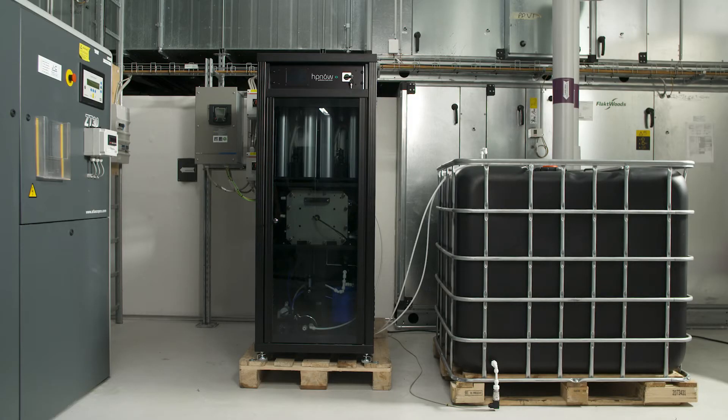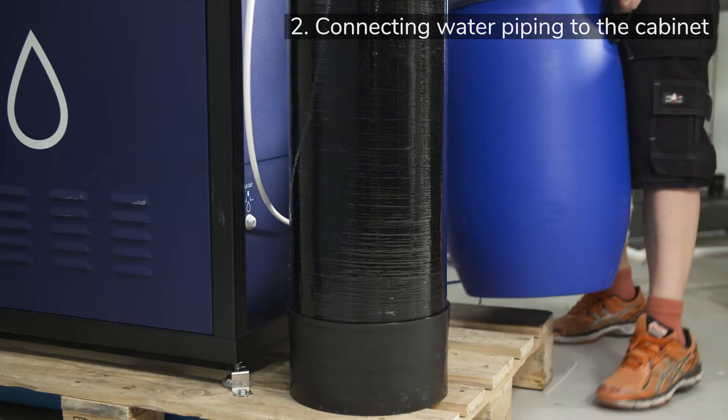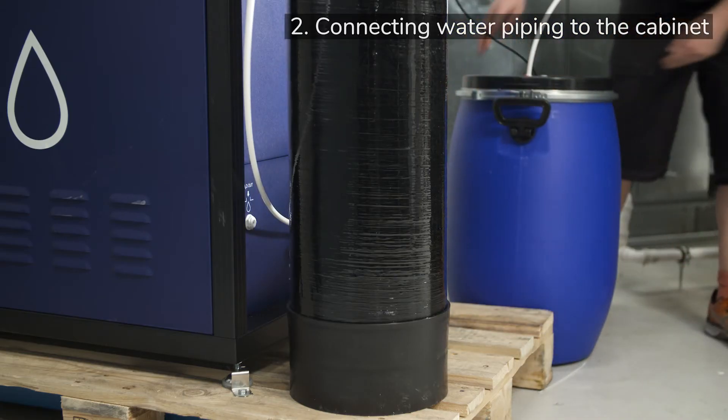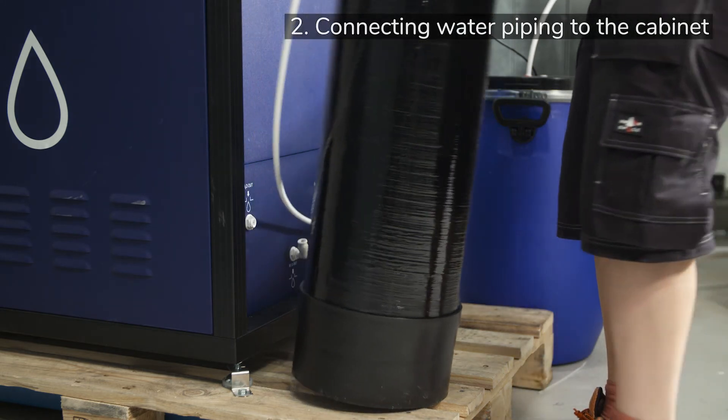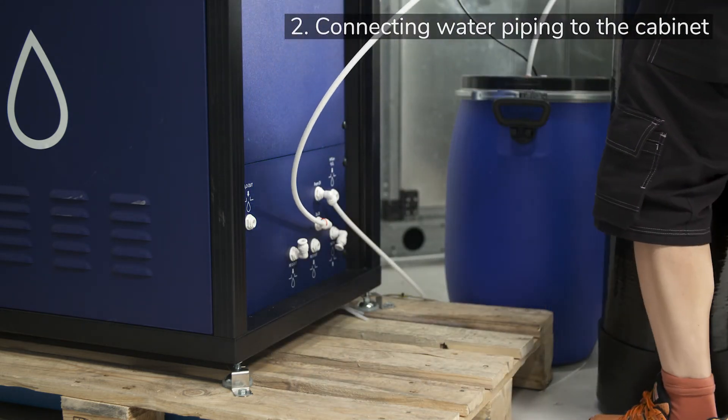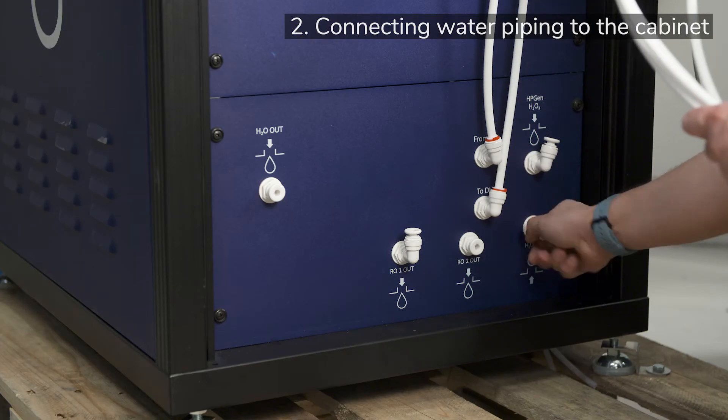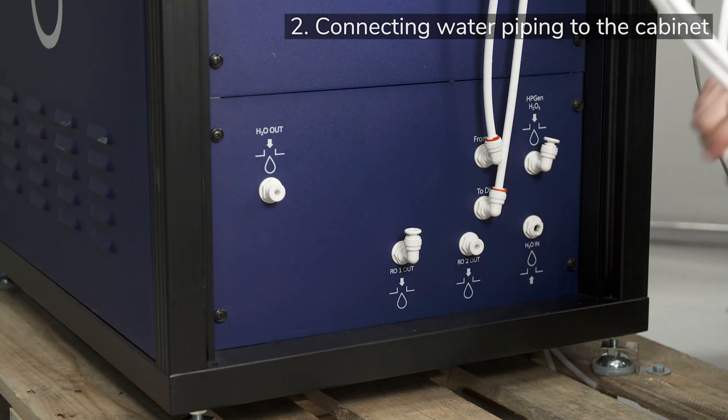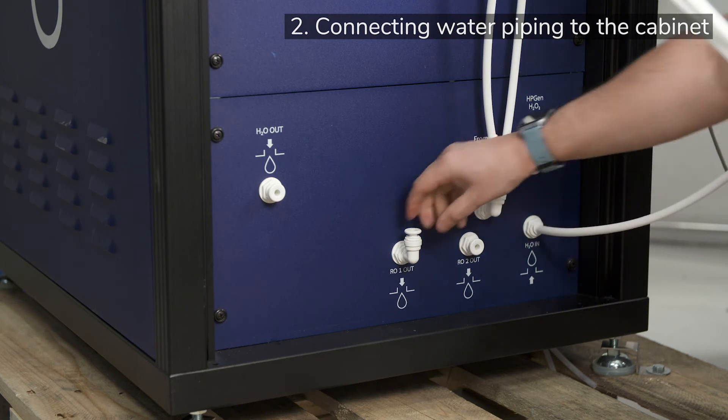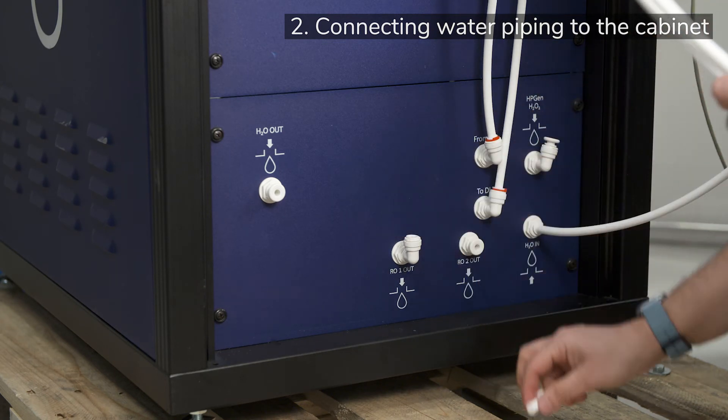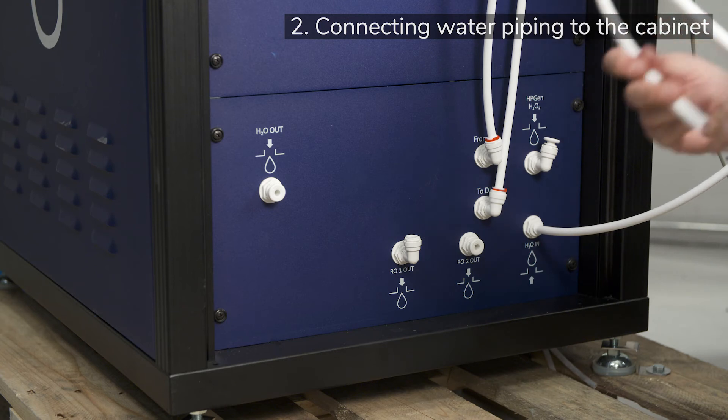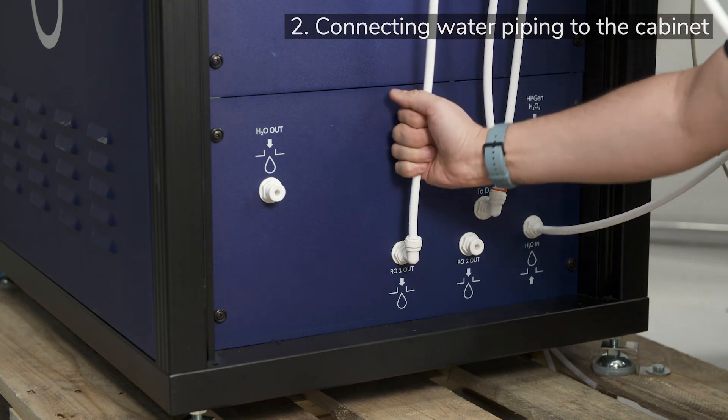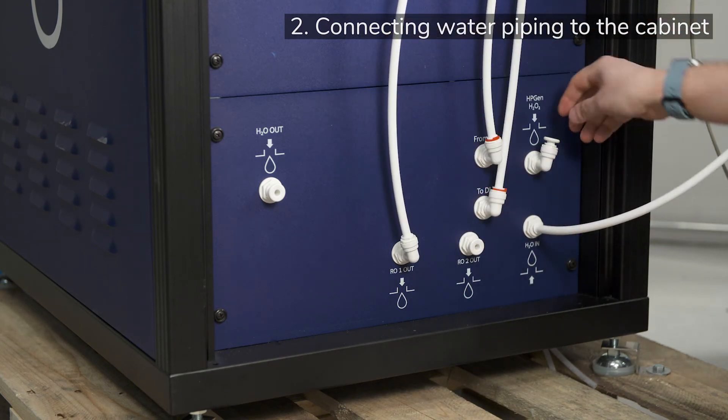Having prepared the reservoir, we now turn to connecting the tubing to the back of the HP Gen. First, move the pure water tank and DI resin column a little to the side for better access. With the back plate accessible, tubing can be connected. For each connection, start by removing the fitting stoppers by pushing in the ring underneath before pulling out the plug. These plugs are just there for transportation and must be removed before other tubing connections can be made.